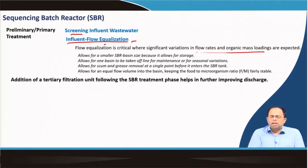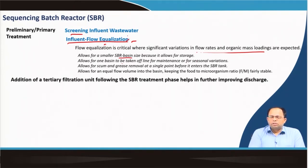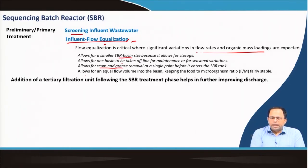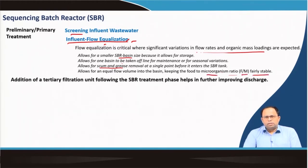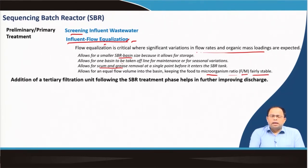The presence of the equalization tank also reduces the size of the SBR basin. It allows maintenance work on the basins while incoming wastewater is stored in the equalization tank. It also allows scum and grease removal at a single point before entering the SBR tank, and it ensures an equal volume flow into the basin, keeping the food-to-microorganism ratio (FM ratio) fairly stable.